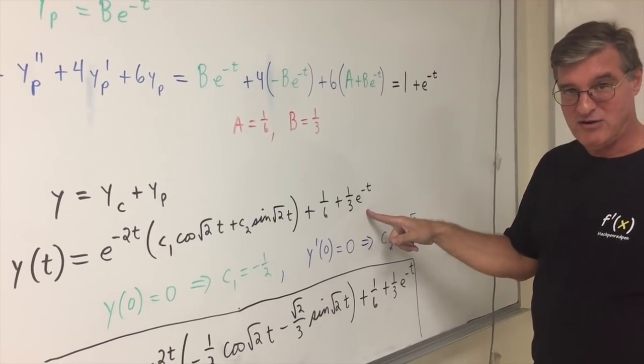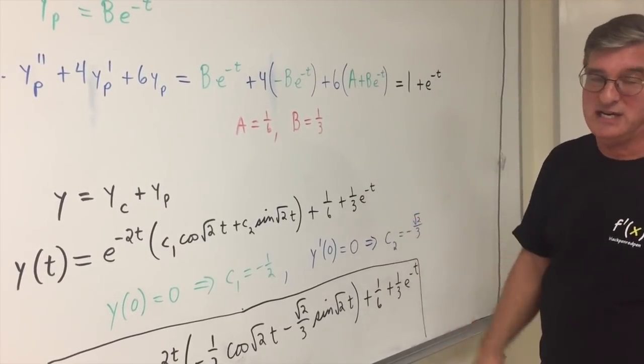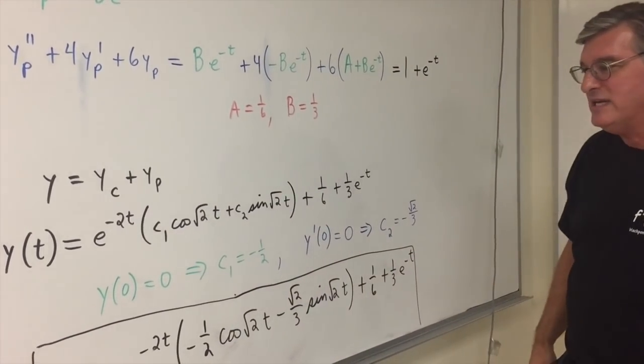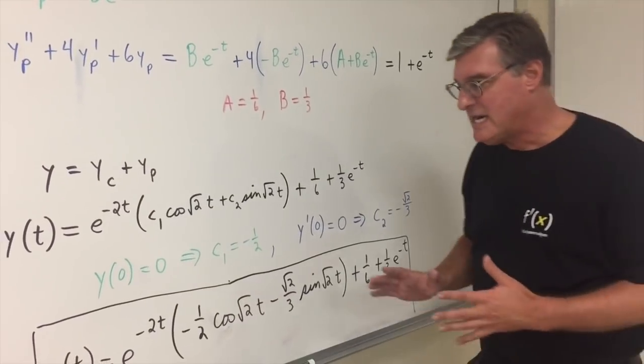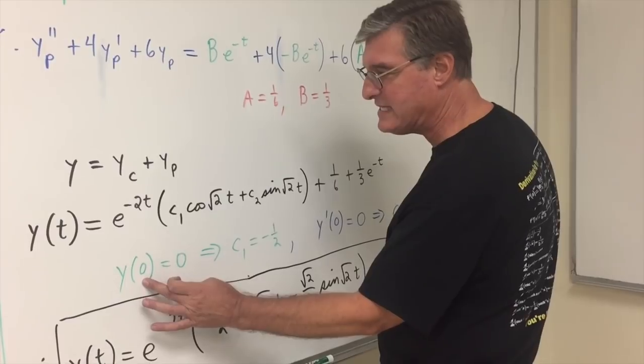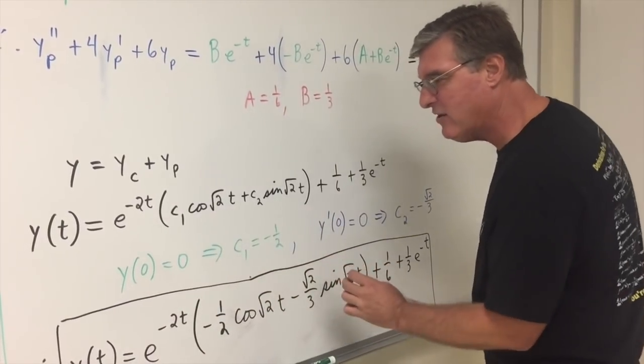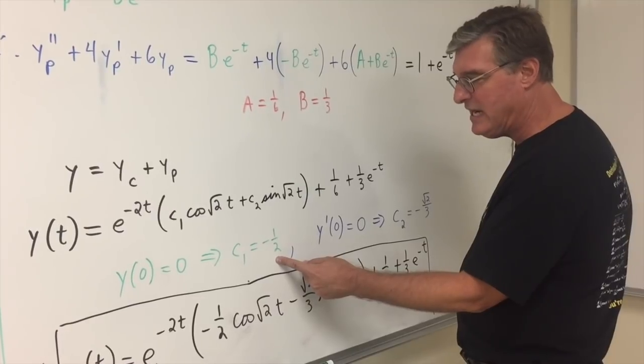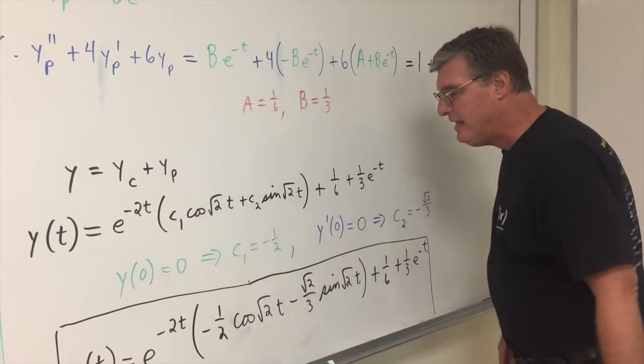Now you see the issue here with undetermined coefficients with the initial conditions is now you've got to figure out what your constants c1 and c2 are. Now, it's not going to be too bad. If you put zero in for y and zero in for t, I think you're going to be able to see that the c1 is going to turn out to be negative 1 half. That's not going to be too bad.